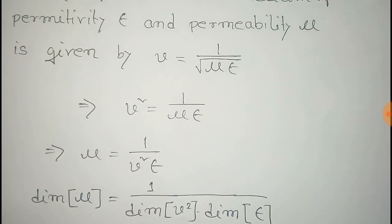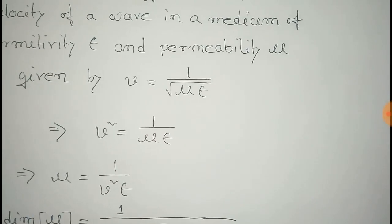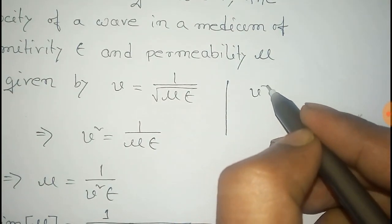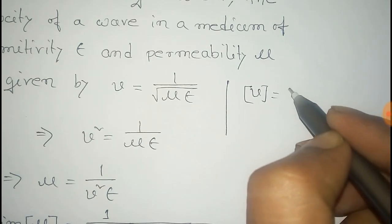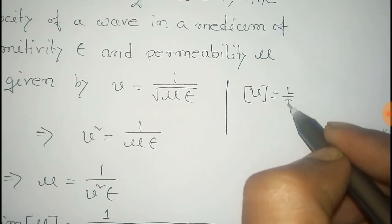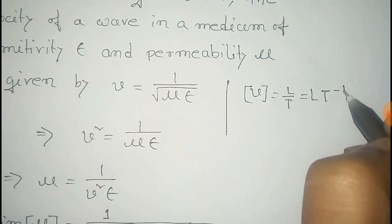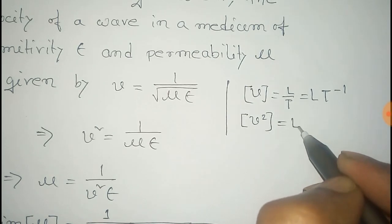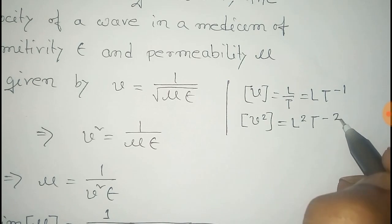v is the velocity. We know that the dimension of v equal to dimension of length by dimension of time, that is L by T, that is equal to LT minus 1. So, dimension of v square, that is equal to L square T to the power minus 2.